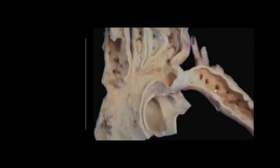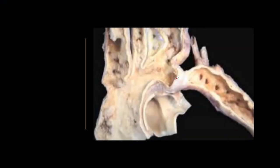Here you can see the adult post-ductal form. You can see the constriction just here, and you can see how dilated the aortic arch is, together with the brachiocephalic trunk, the left common carotid, and the left subclavian artery.